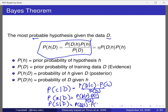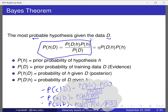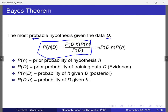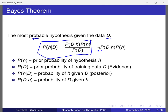Since P(D) is always in the denominator when computing all hypotheses, we can factor it out. We define eta as 1 / P(D), so the Bayesian rule for each hypothesis simply becomes eta times the numerator. This simplifies comparison across hypotheses.